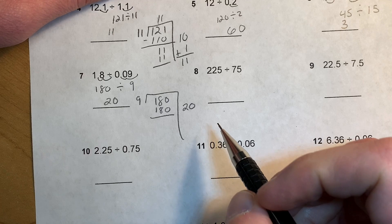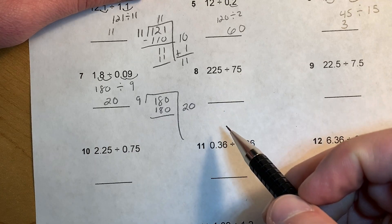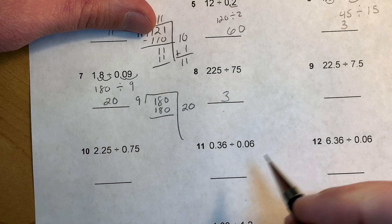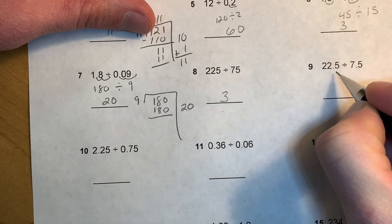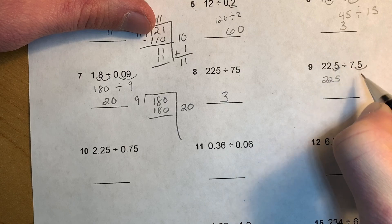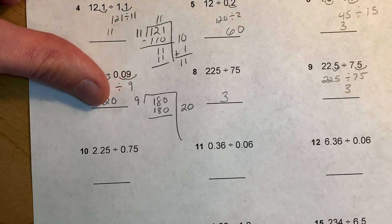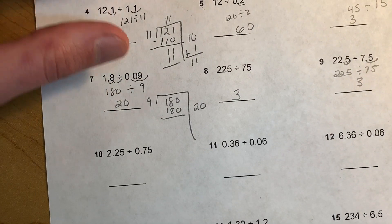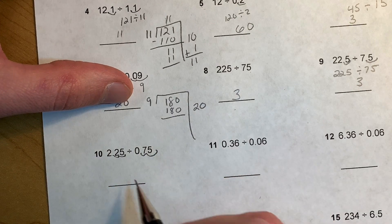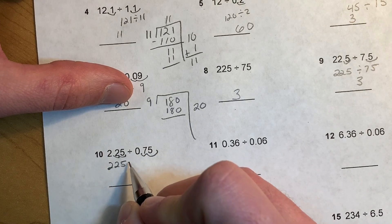This one's just whole numbers, so you can just divide that regularly. An easy way to do it too is we know 75 plus 75 is 150, and 150 plus another 75 would be 225, so it's just 3. And this is going to end up being the same problem as this, because we're going to multiply this by 10 and this by 10, so move the decimal place over 1, move this one over 1, and you get the same problem. And what do you know, we got the same problem right here. So multiply this by 100 and times by 100, so we have 225 divided by 75.